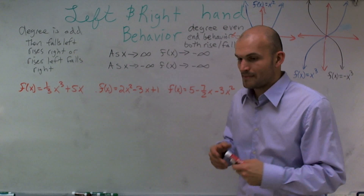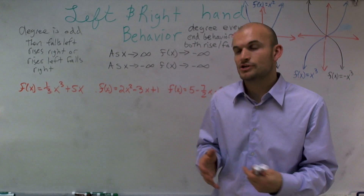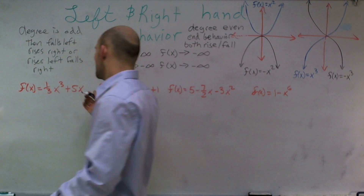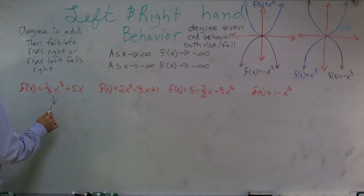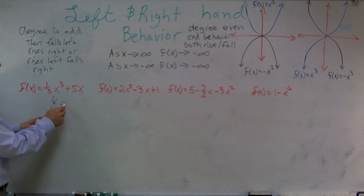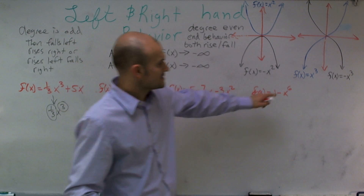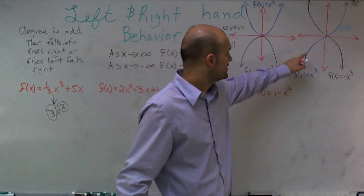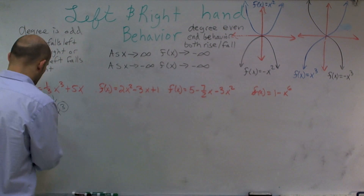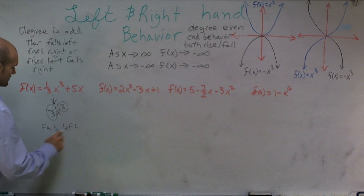When finding the end behavior, all we need to do is take out our leading term and determine what it resembles. For the first problem, the leading term is one-third x cubed. I have an odd degree and a positive leading coefficient. Since the coefficient is positive, my graph is going to fall to the left and rise to the right — falls left, rises right.